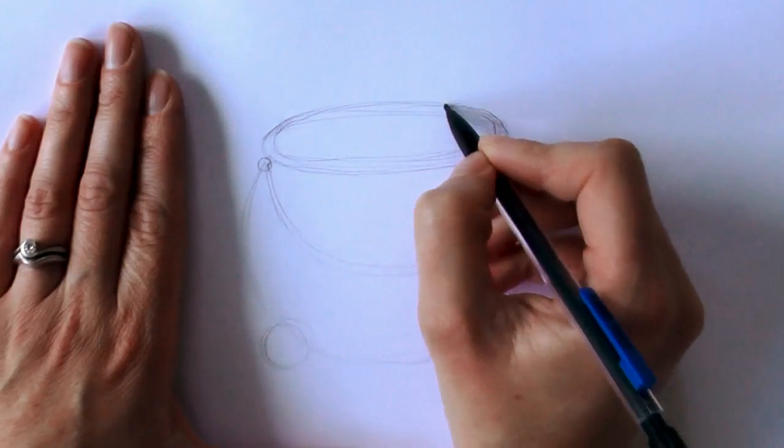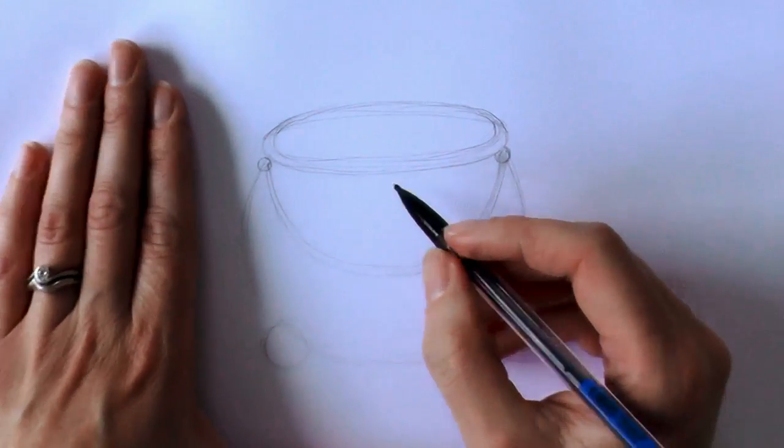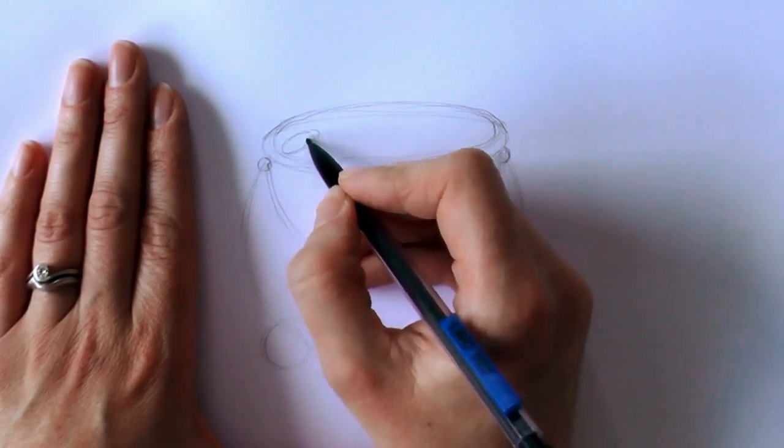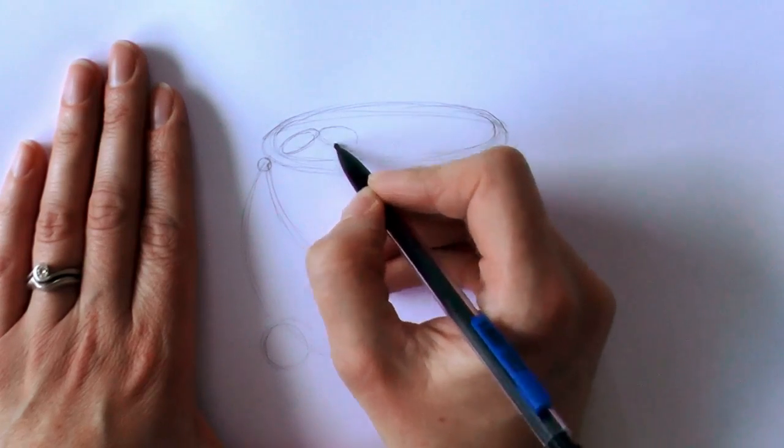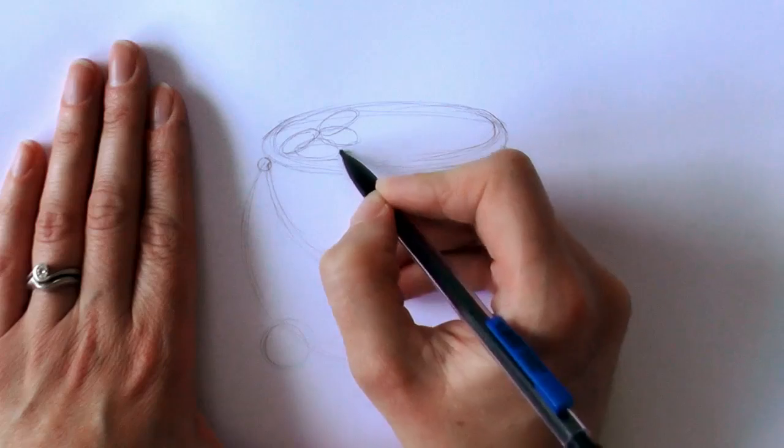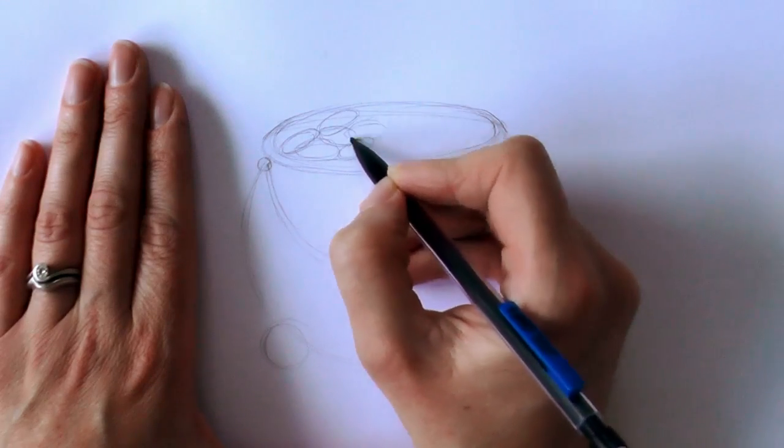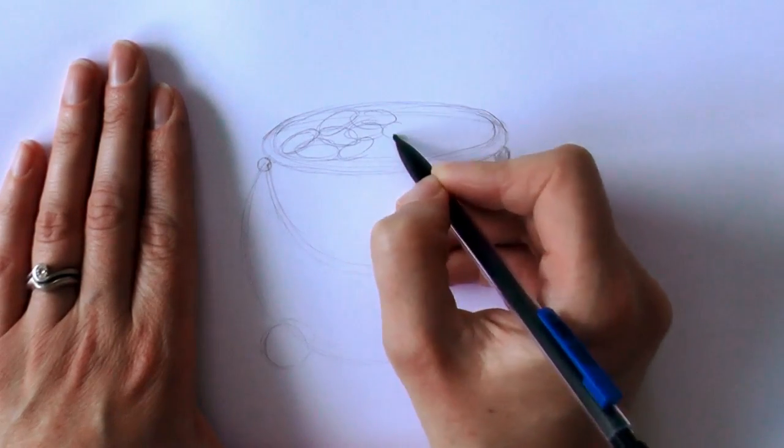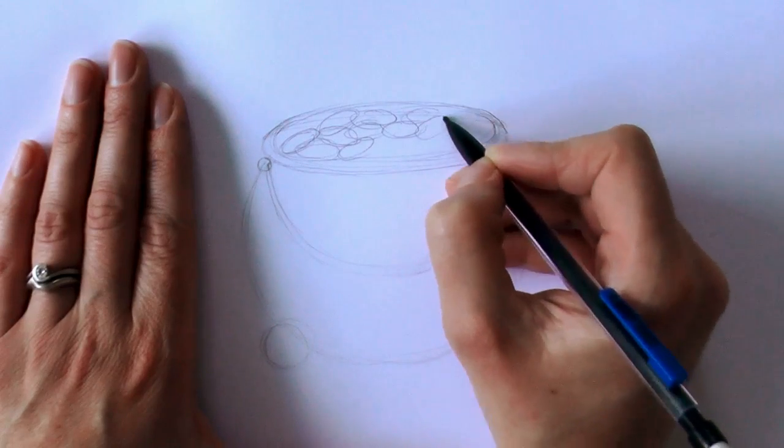So there we go, that's the pot. So then next up we're going to draw the gold. So again, we just want to draw some oval shapes. Just kind of randomly put them in all over each other. Fill the pot up.